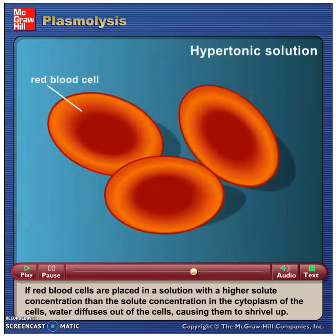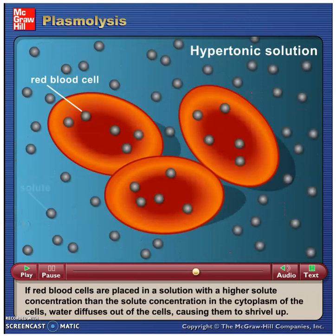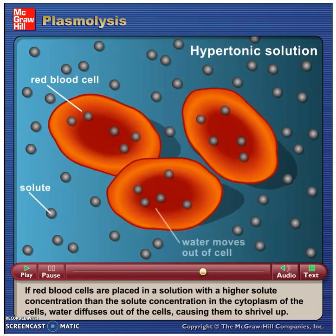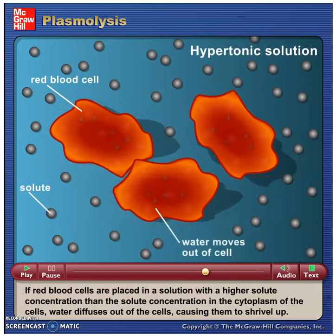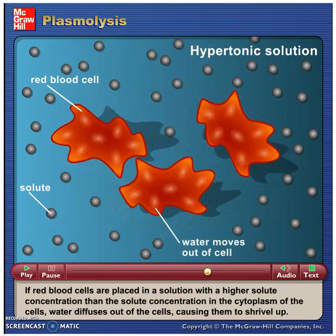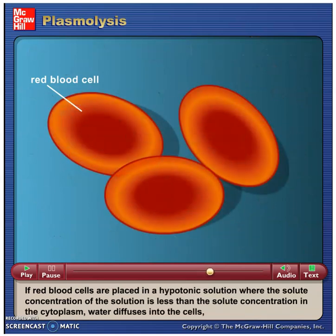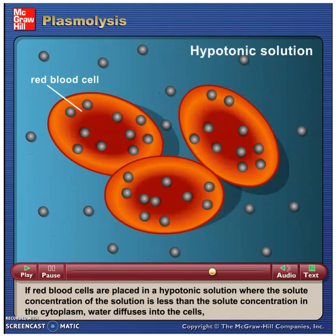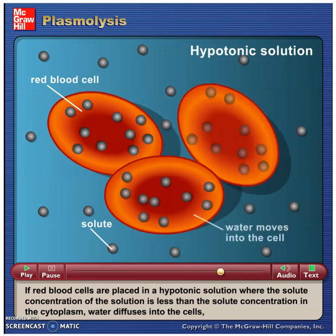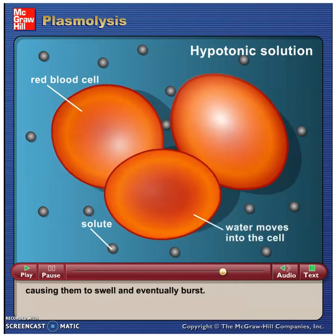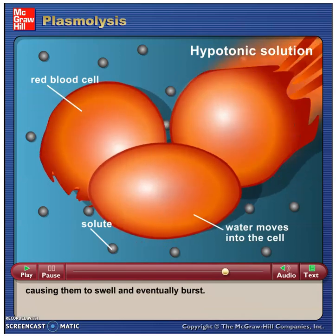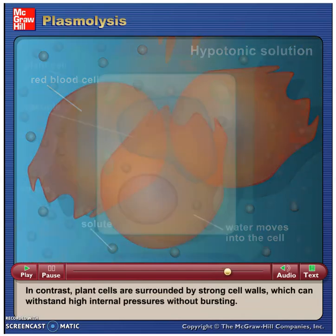If red blood cells are placed in a solution with a higher solute concentration than the solute concentration in the cytoplasm of the cells, water diffuses out of the cells, causing them to shrivel up. If red blood cells are placed in a hypotonic solution where the solute concentration of the solution is less than the solute concentration in the cytoplasm, water diffuses into the cells, causing them to swell and eventually burst.